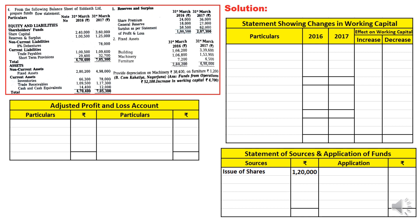In reserves and surplus, share premium was ₹24,000 last year and is ₹36,000 this year. Share premium is increasing, which means the shares issued for ₹1,20,000 were issued at a premium, so the collection of premium — ₹12,000 — is recorded as a source. General reserve increased from ₹18,000 to ₹27,000, a rise of ₹9,000, recorded in the adjusted P&L account as transfer to general reserve. The surplus balance in P&L account is written with opening and closing balances accordingly.